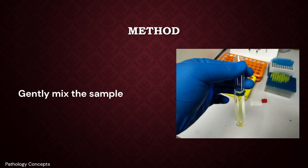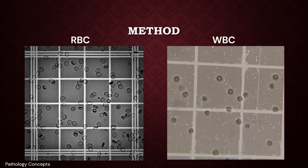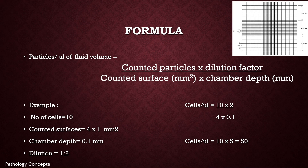To count cells: gently mix the CSF sample and charge one side of the Neubauer chamber without dilution. Charge the other side with appropriate dilution using CSF diluting fluid. Let it stand for 5 minutes, then count WBCs and RBCs under the microscope. Repeat twice and take the average. The formula is: cells per microliter = (counted particles × dilution factor) / (counted surface × chamber depth).